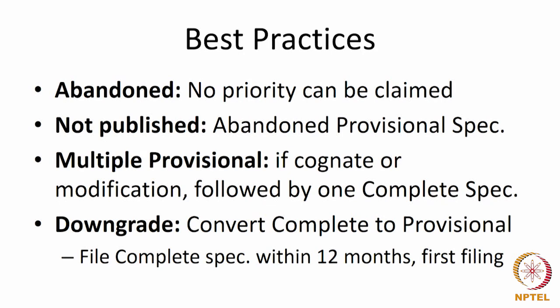You could file multiple provisionals, as seen in Section 9, and follow them up with one complete specification, if the applications are cognate or one is a modification of the other. So if there are related applications, you could file multiple provisionals and follow up with one complete, provided the complete is filed within 12 months of the first application. You could also downgrade a complete specification — referred to as a purported complete under Section 9 — into a provisional.